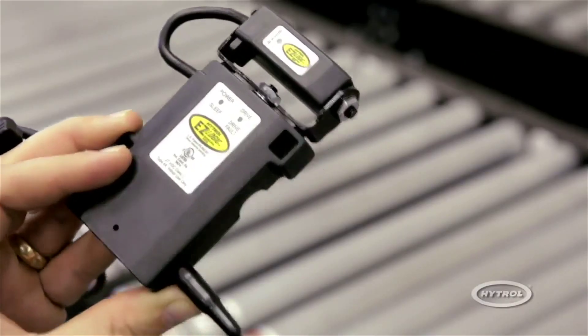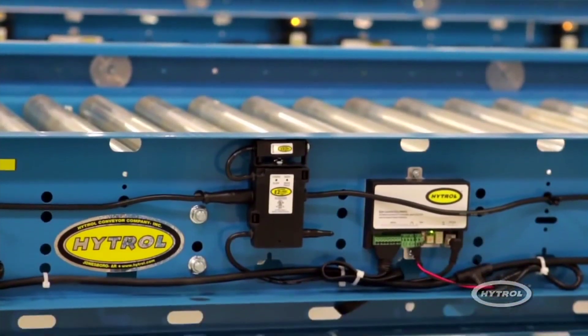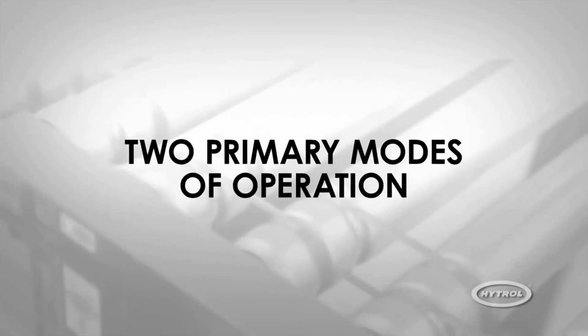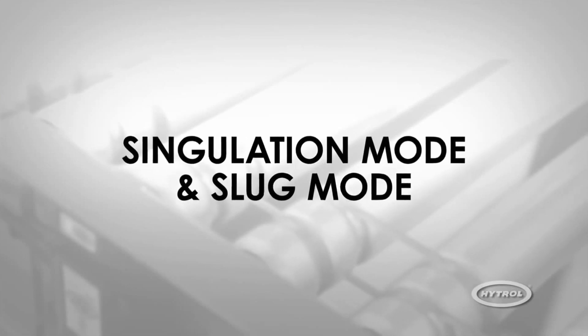The Hytrol EasyLogic system offers a variety of special functions to enhance product flow. The two primary modes of operation for transporting and accumulating product are Singulation Mode and Slug Mode.